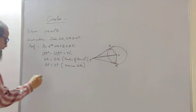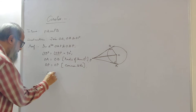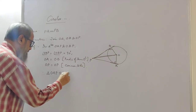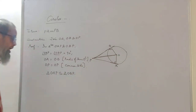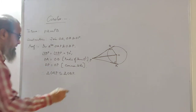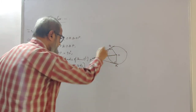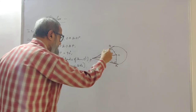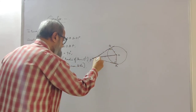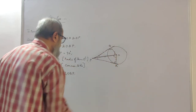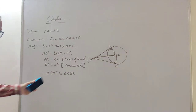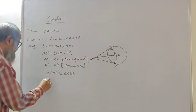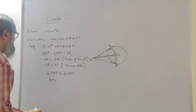Therefore, triangle OAP is congruent to triangle OBP. These two triangles are congruent because all corresponding sides and angles are equal — this side equals that side, this side equals that side, OP is common, and each corresponding angle is equal.